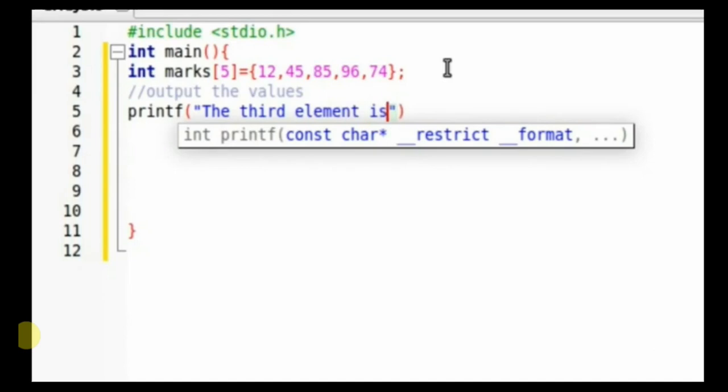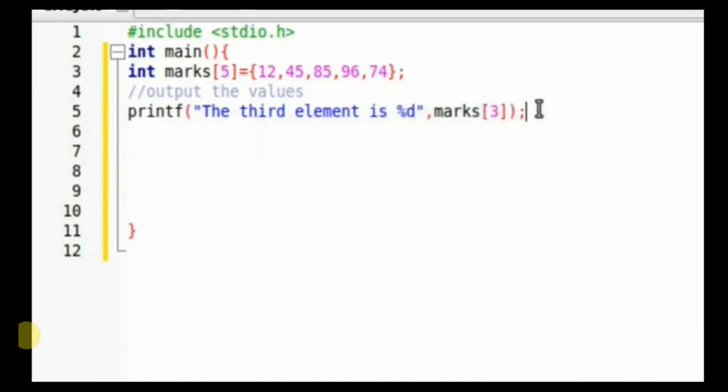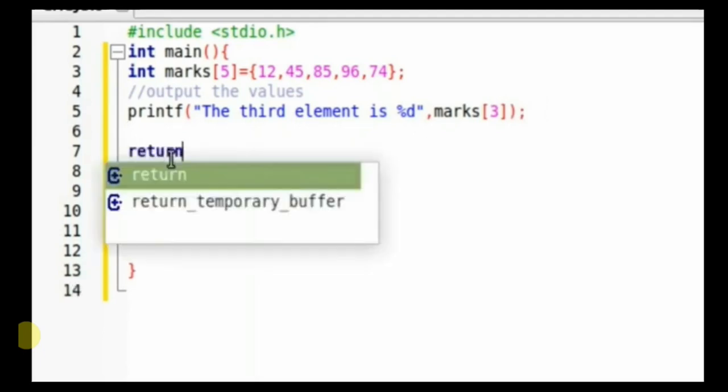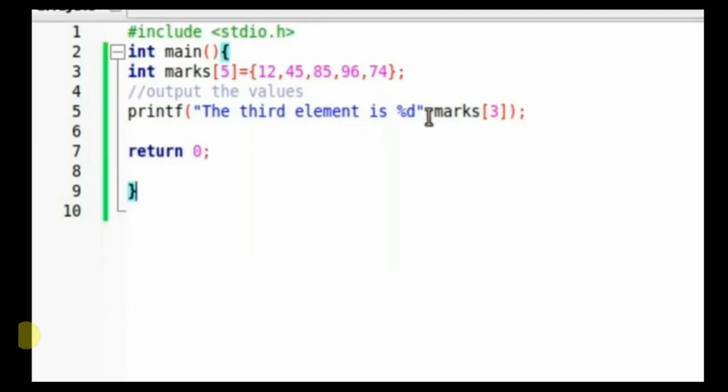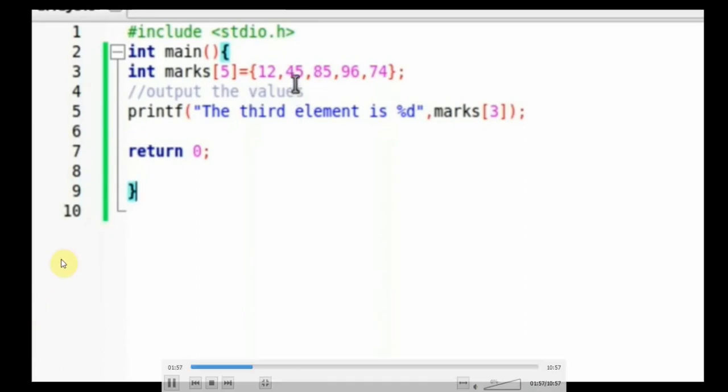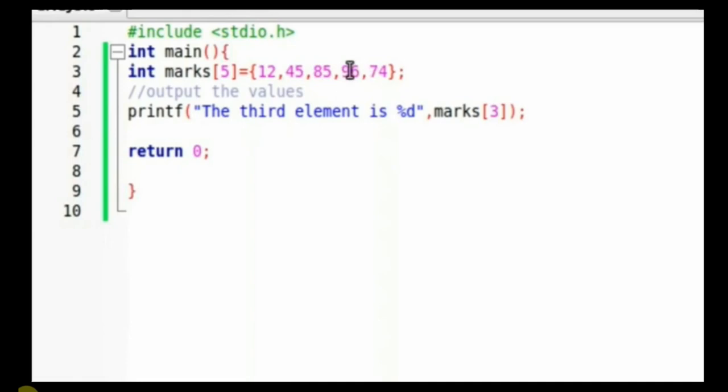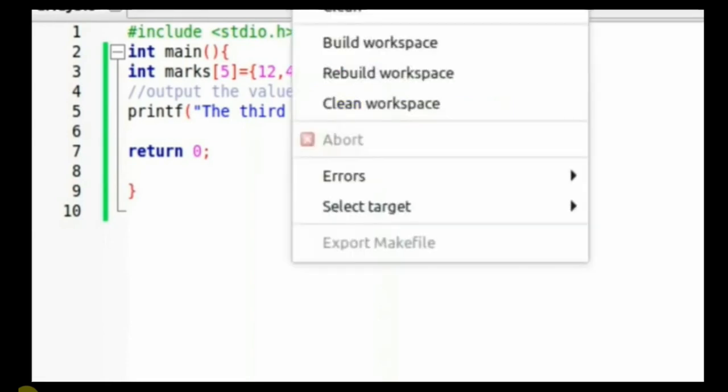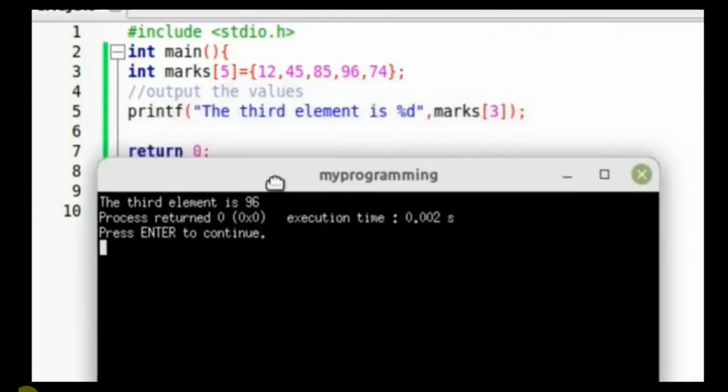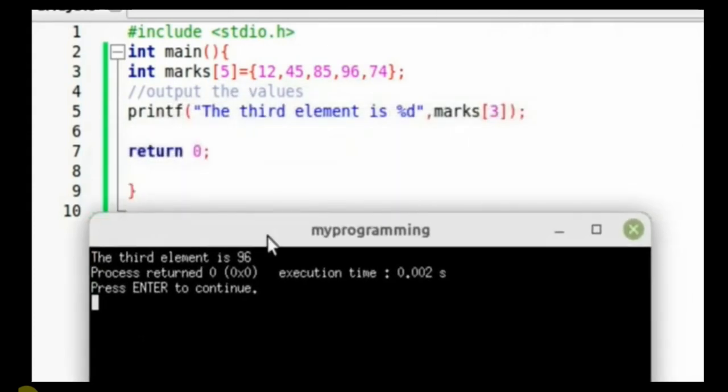From the array, this implies we're looking at value 96. If we use marks subscript 3, this gives us 96 because we count from 0. 12 is subscript 0, 45 is subscript 1, 85 is subscript 2, and 96 is subscript 3. Let's see the output. There it is, the third element is 96.